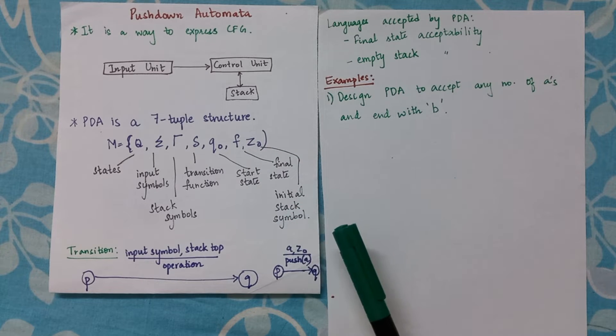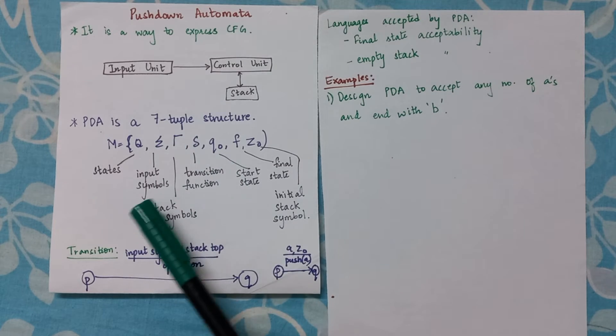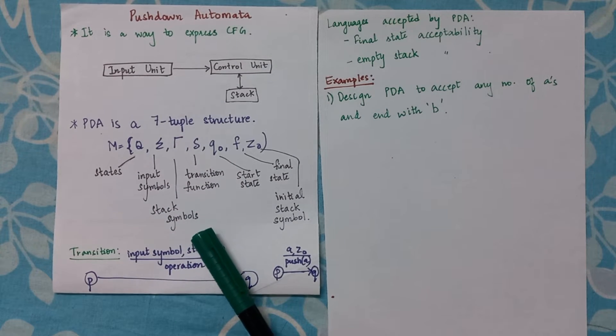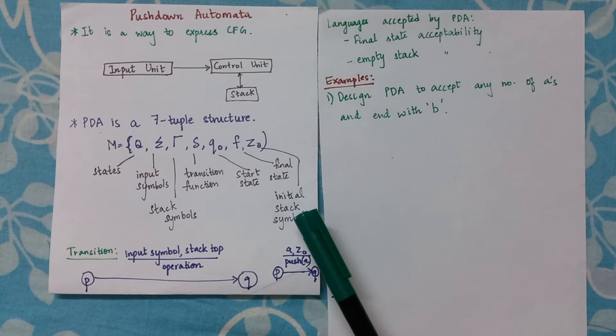So as you can see there are two things that are added. One is what stack symbols are allowed and another one is Z0 which indicates what is the initial stack symbol.